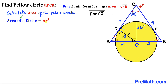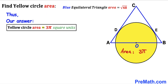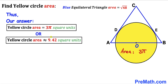Here's our final step: let's calculate the area of this yellow circle. Recall the area of a circle formula: area = π·r², where r is the radius. In our case r = √3, so the area equals π·(√3)² = 3π square units. Thus the area of this yellow circle is 3π square units, which is approximately 9.42 square units. Thanks for watching, and please don't forget to subscribe to my channel for more exciting videos!